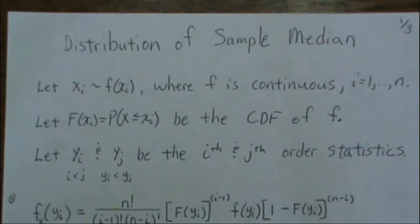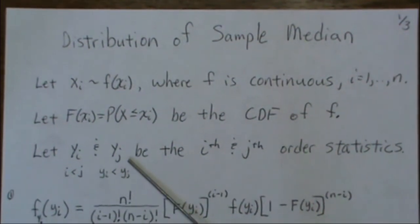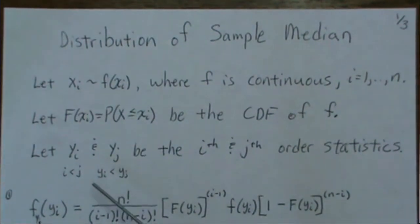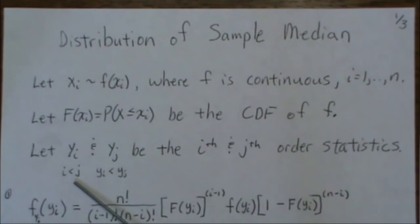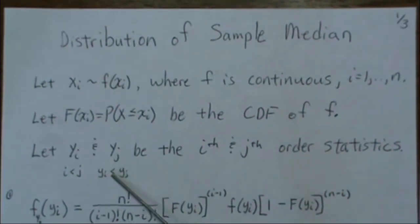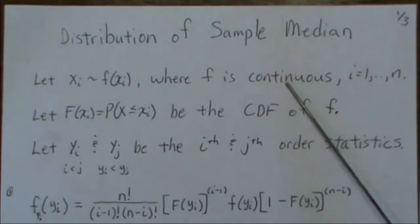And we're going to let our Yi and Yj be the ith and jth order statistic, where i is less than j and Yi is strictly less than Yj. And we can assume that because we're in the continuous case.